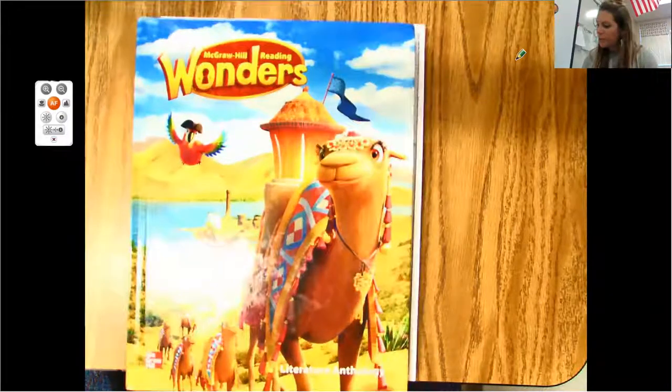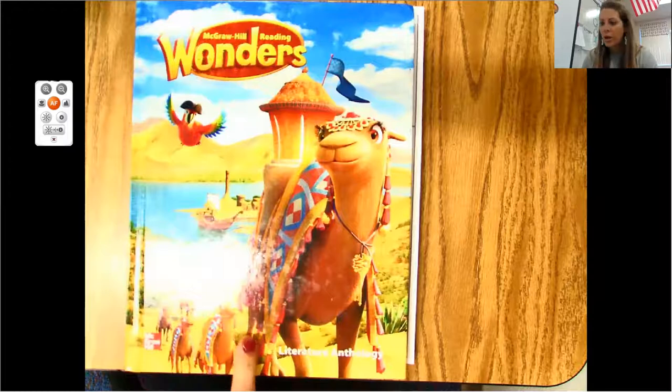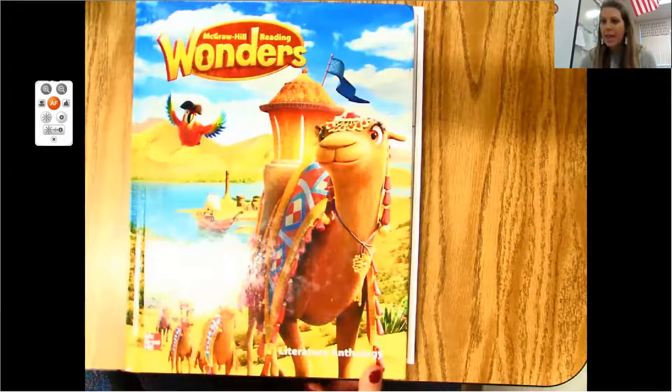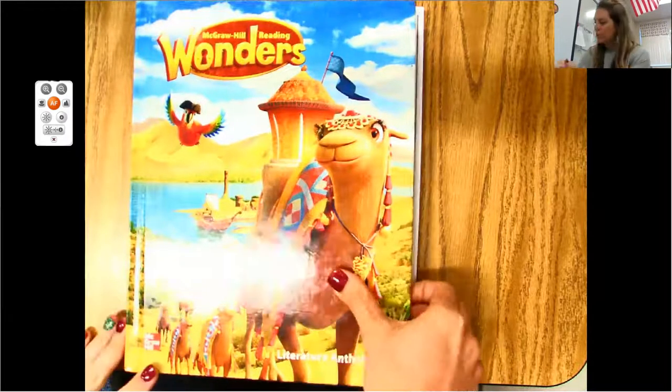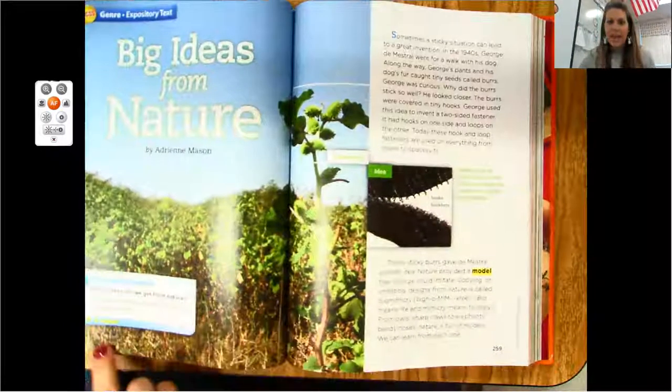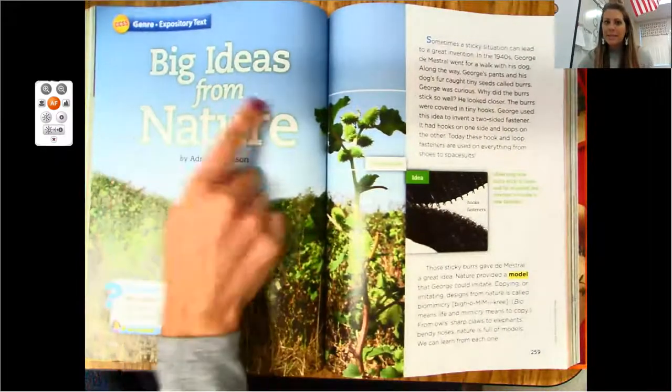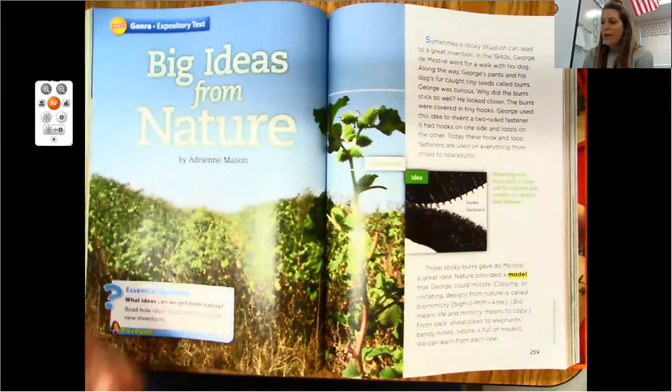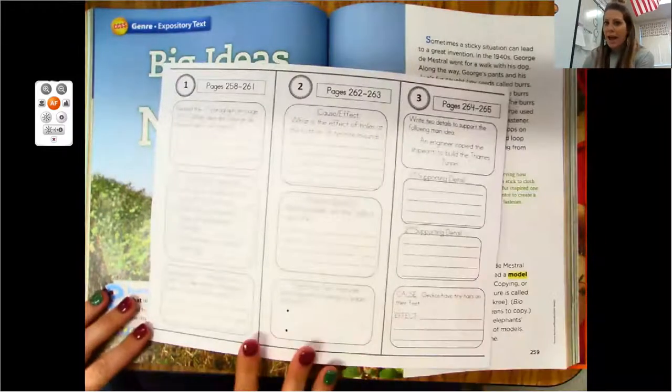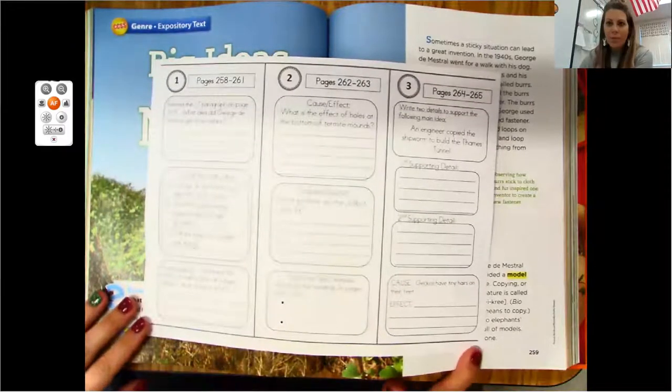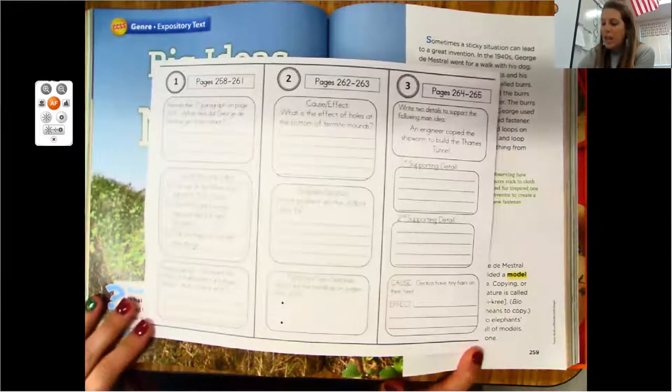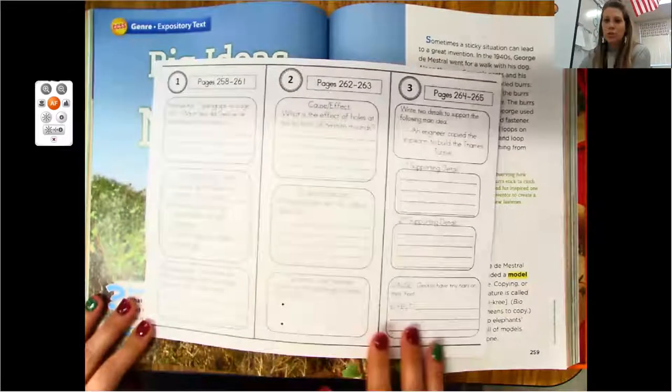Hi friends. So today you are going to need your big Wonders anthology book and I'm going to need you to turn to page 258 and 259. Big ideas from nature. I also want you to make sure you have this page printed out from Schoology and we're going to work on one and two today.